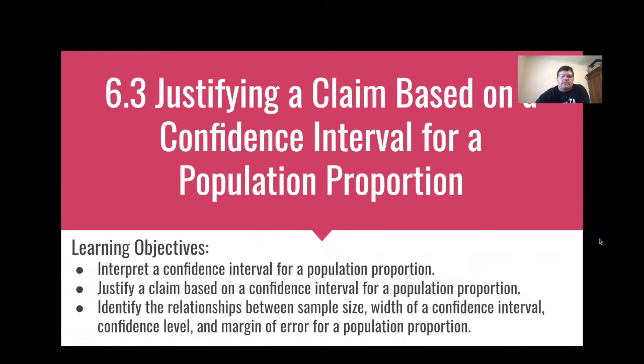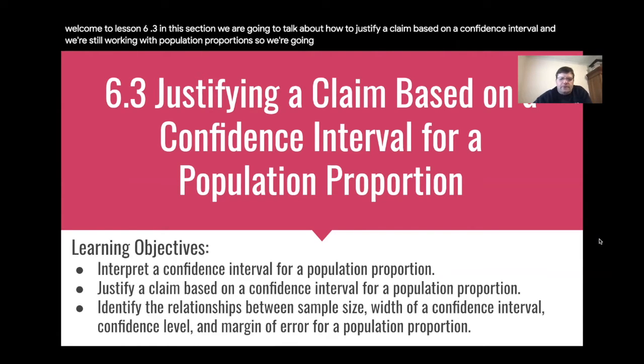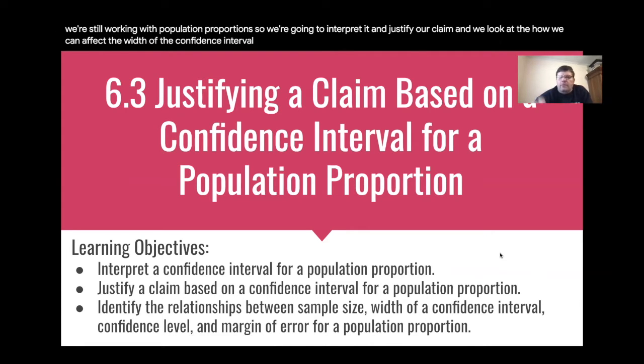Hello. Welcome to lesson 6.3. In this section we are going to talk about how to justify a claim based on a confidence interval and we're still working with population proportions. So we're going to interpret it and justify our claim and look at how we can affect the width of a confidence interval and what's called the margin of error. Alright, so let's go ahead and jump in.